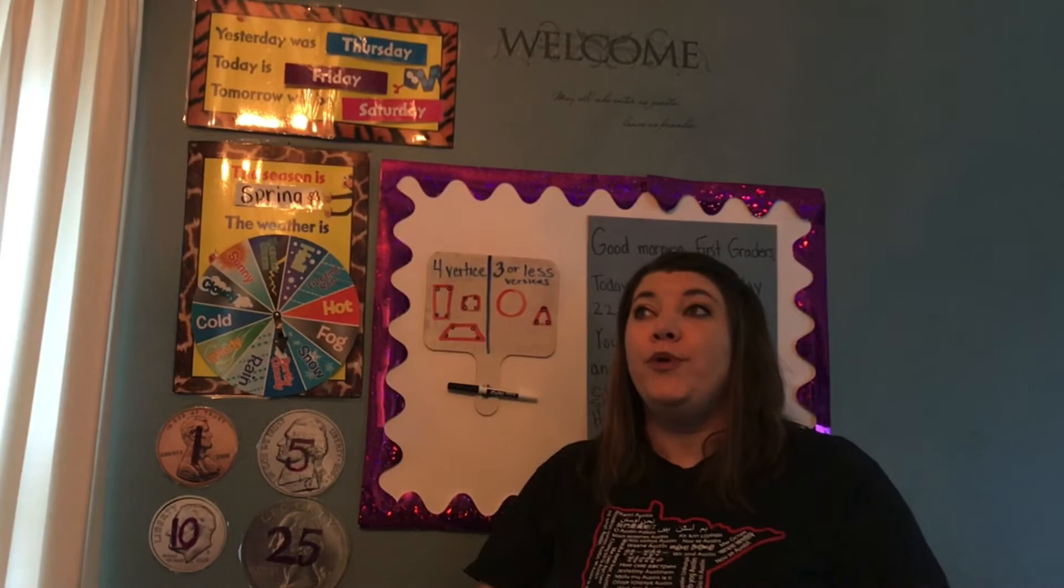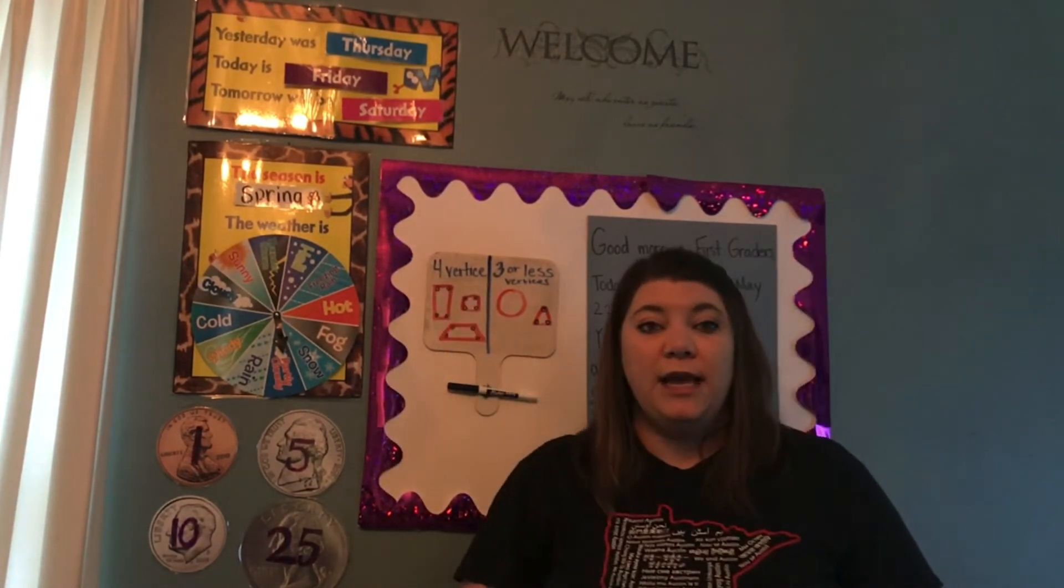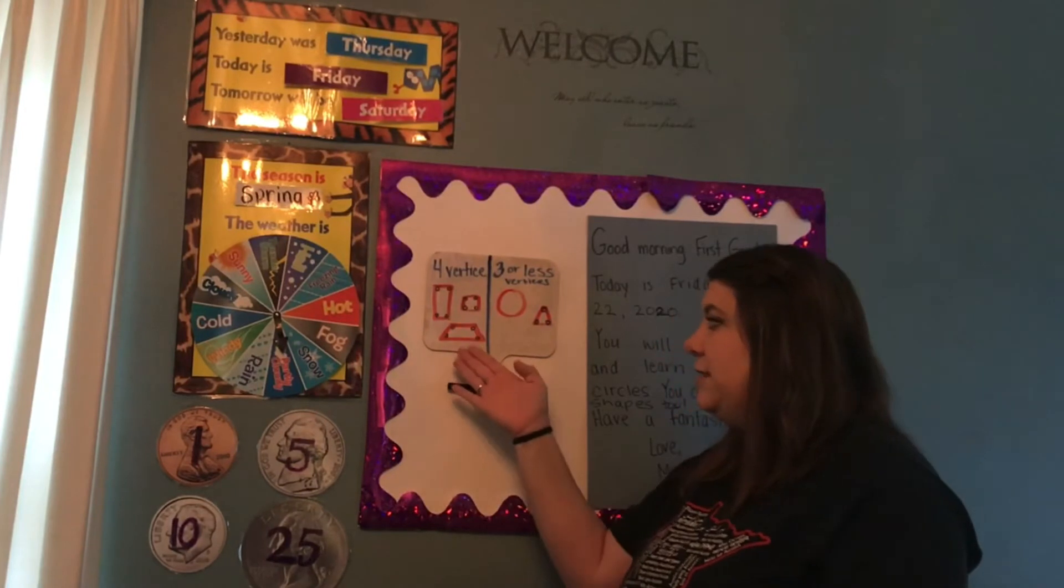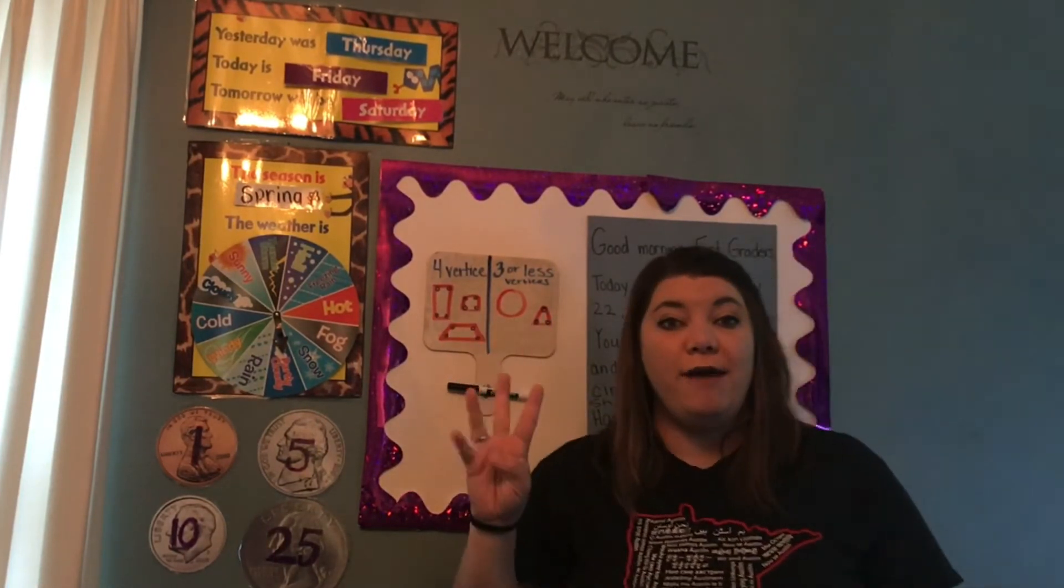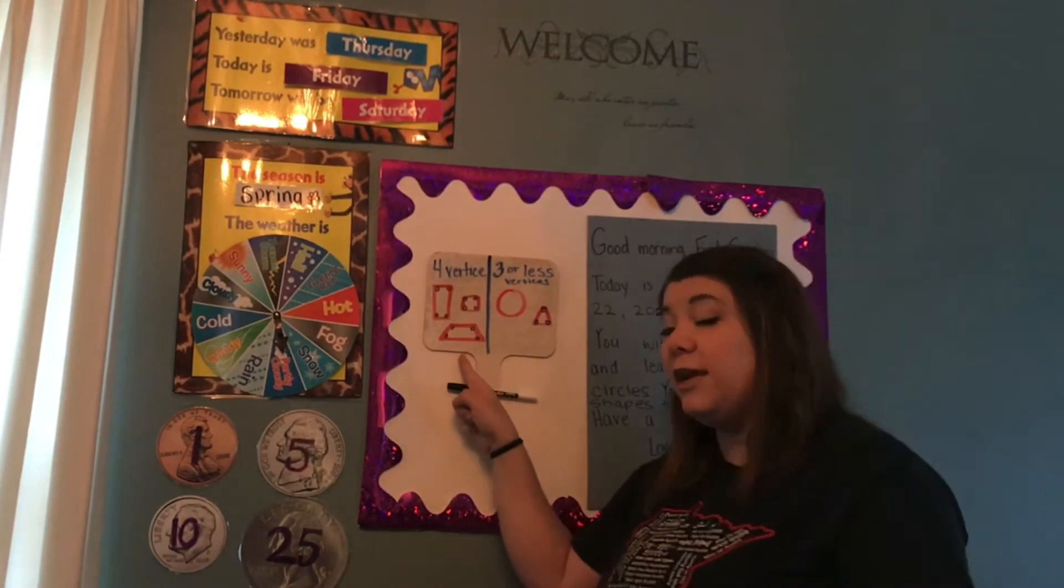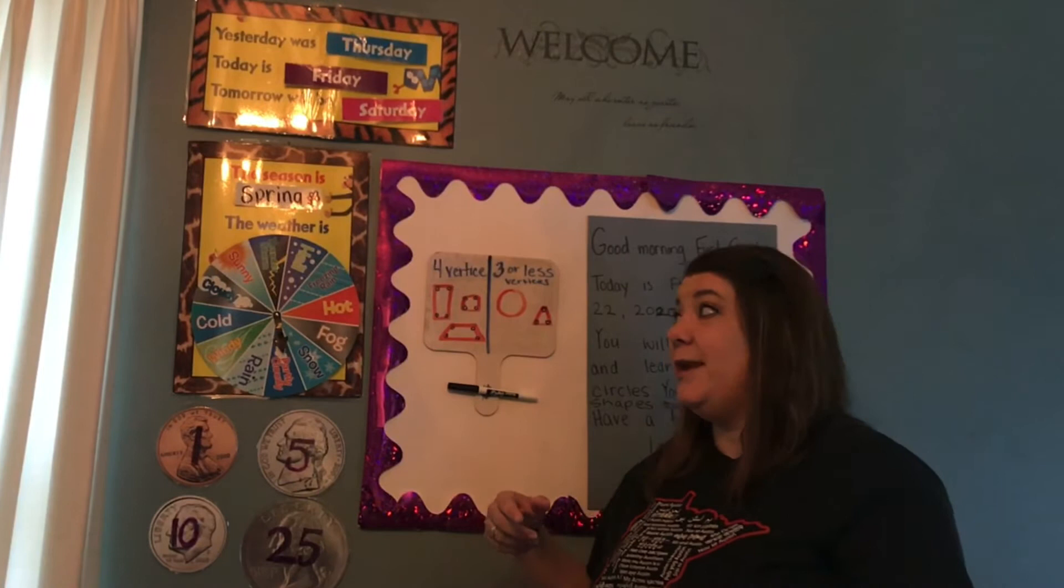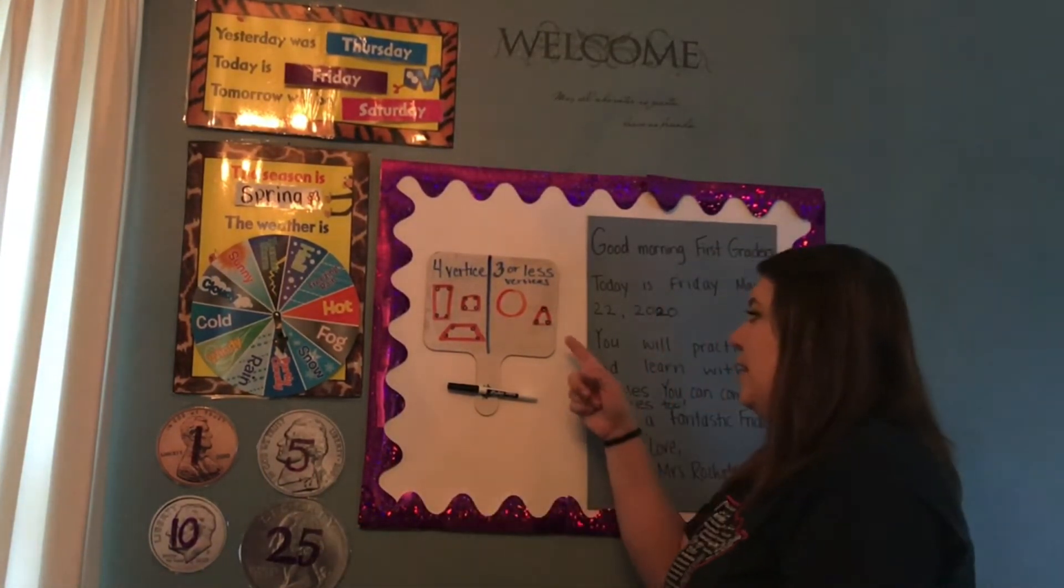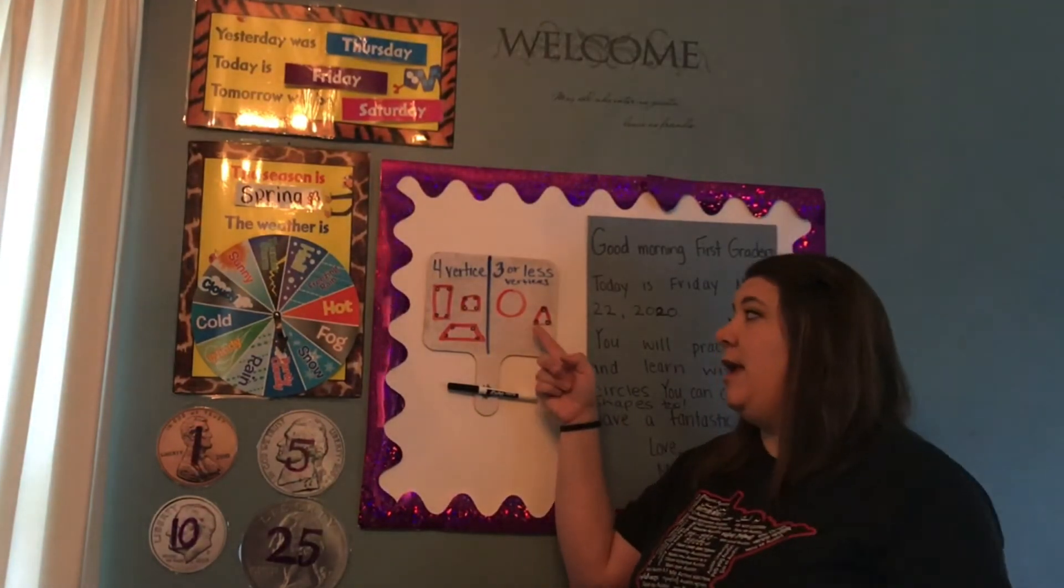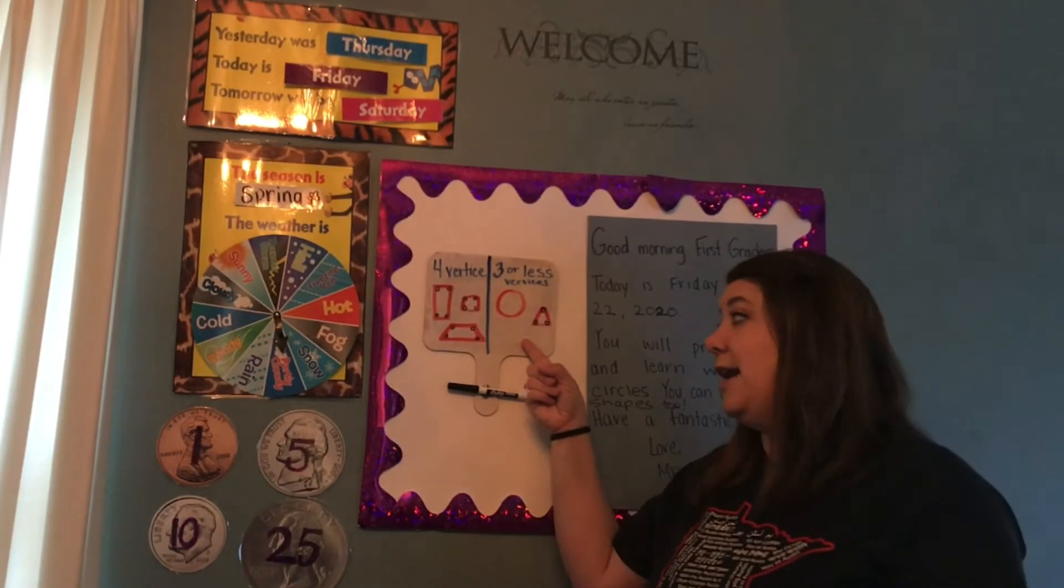If I said, put all the shapes that have four vertices on the left side, you could see how the trapezoid, the rectangle, and the square all have four vertices. So I put them over here. If I said to compare shapes that have three or less vertices, like the triangle only has three and the circle has none, I would put them on the right.